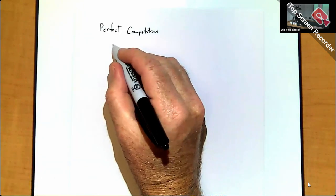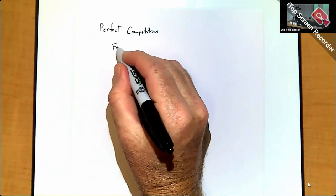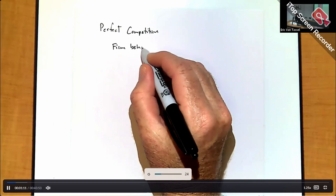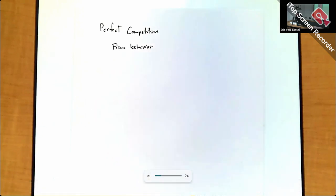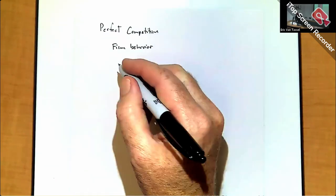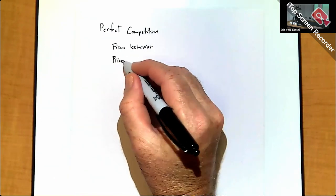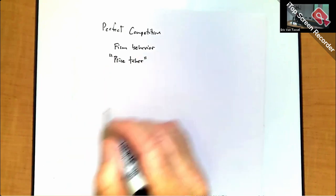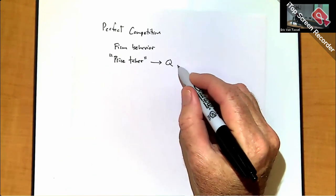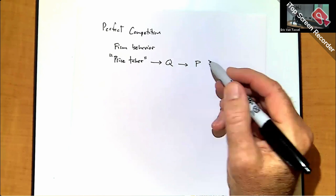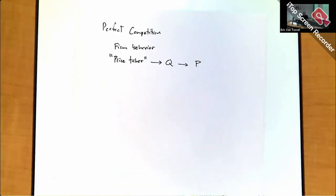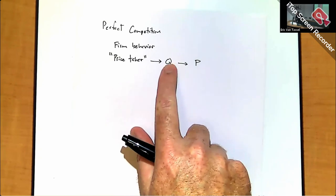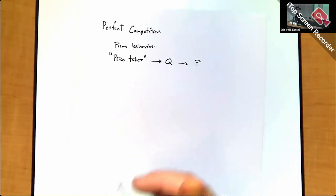The focus here is on a model of firm behavior. The critical assumption when modeling the behavior of the firm is that we're assuming the firm is a price taker. The product they're producing, product Q, has some price in the market, P, and this is taken as given. So there's no ability to negotiate or even to influence the price through its own supply decisions when it picks Q.